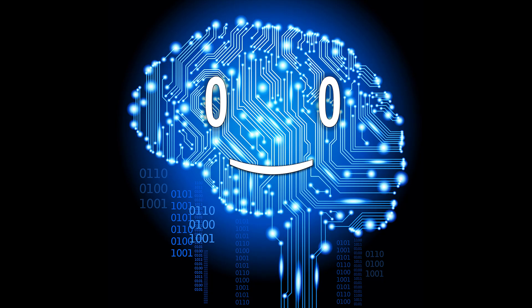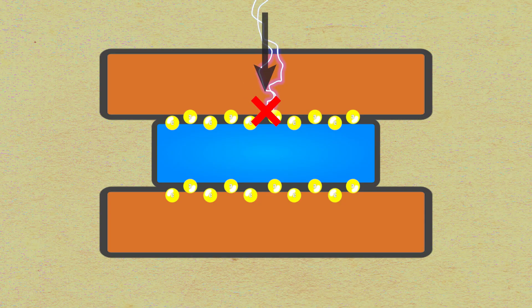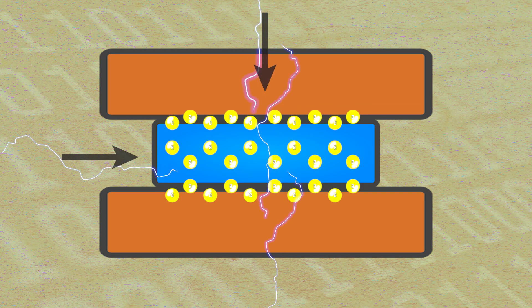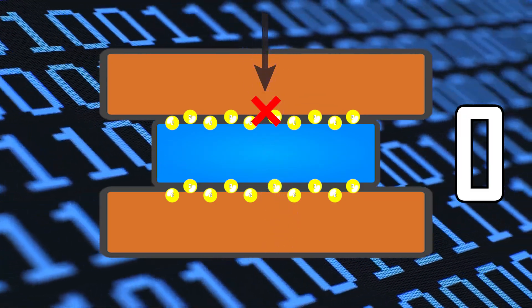It's essentially a switch on the nanoscale, alternating between conducting and non-conducting states and vice versa, and these states are how we represent ones and zeros in binary code.